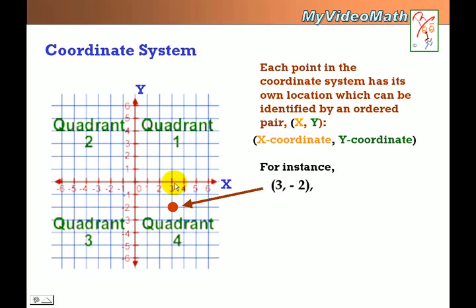The y-coordinate is negative 2, which is 1, negative 2. So, where they're crossing each other, that location would be the location of the ordered pair 3, negative 2.